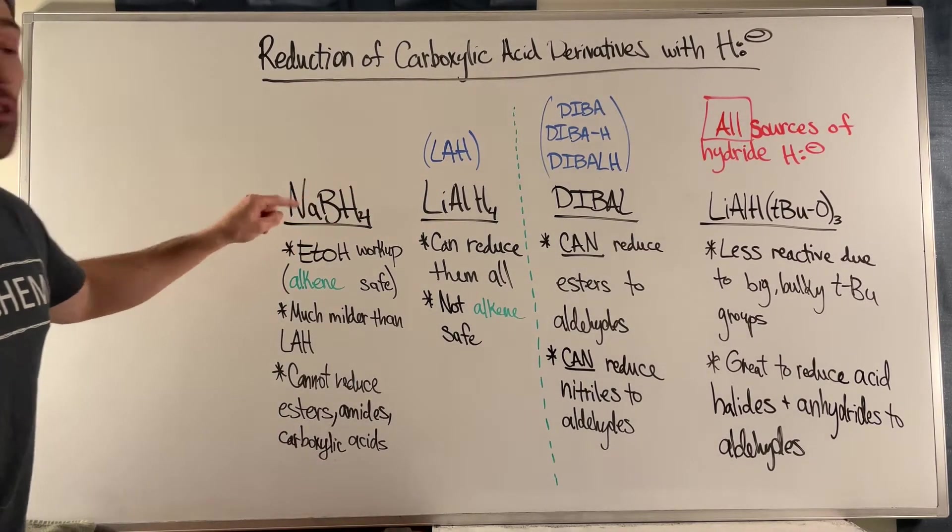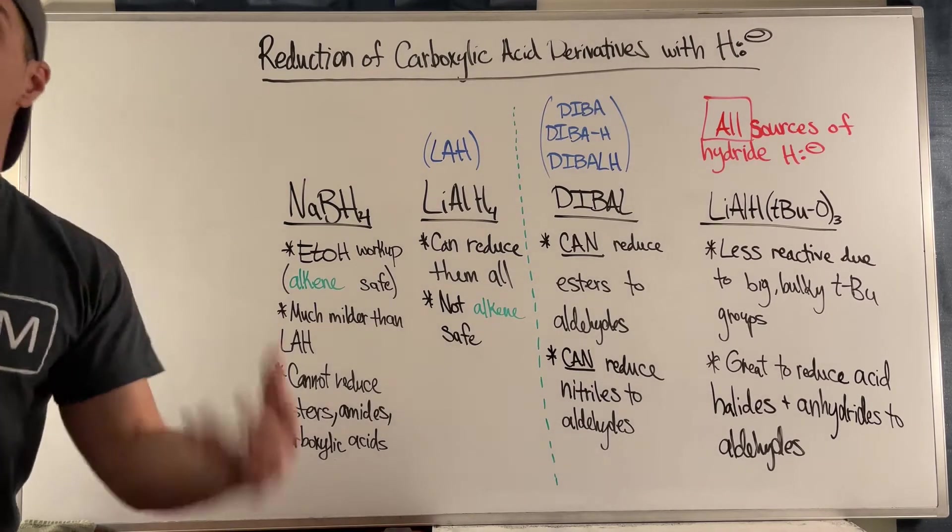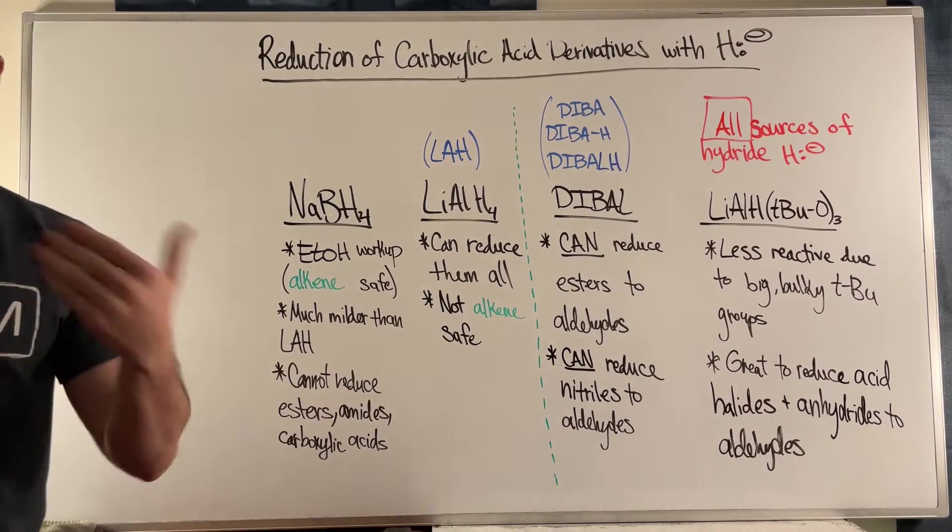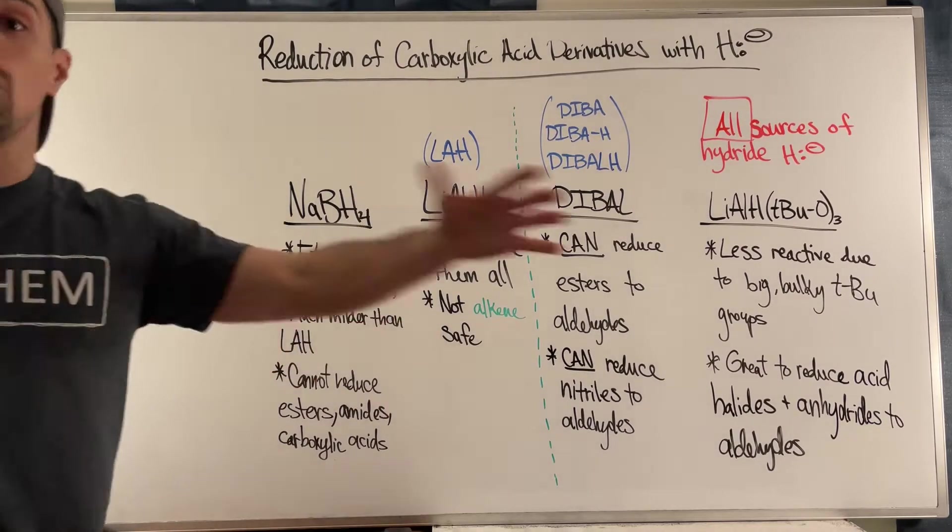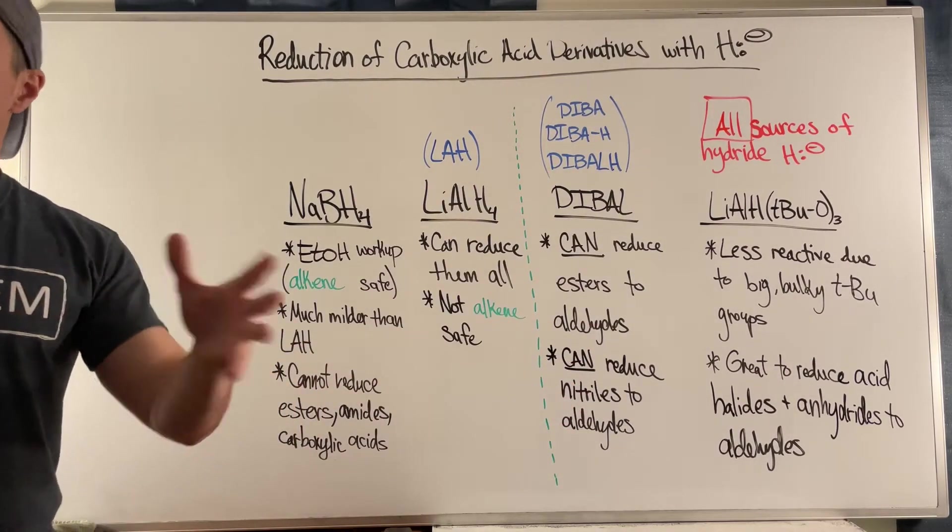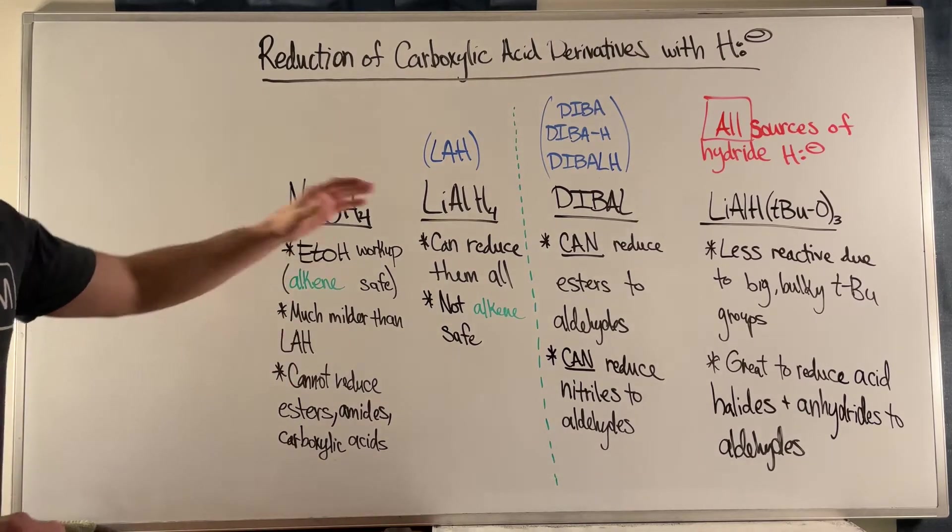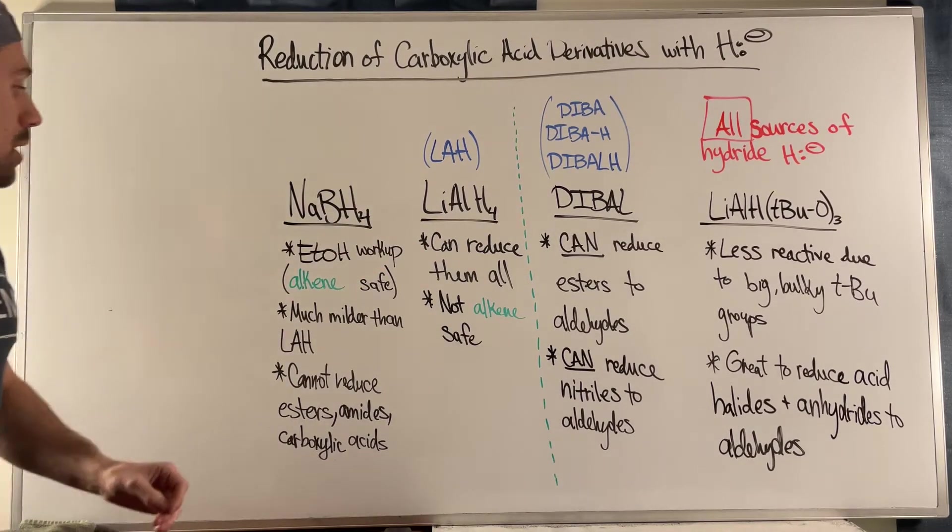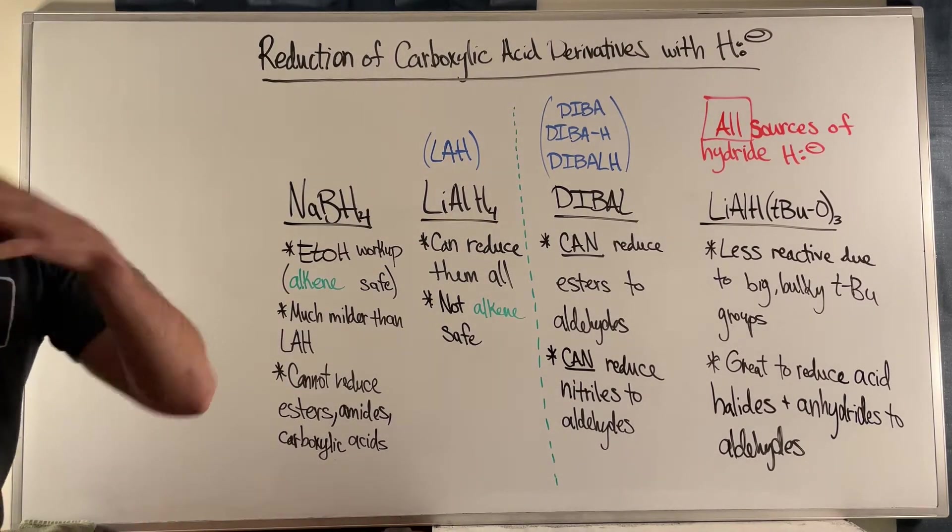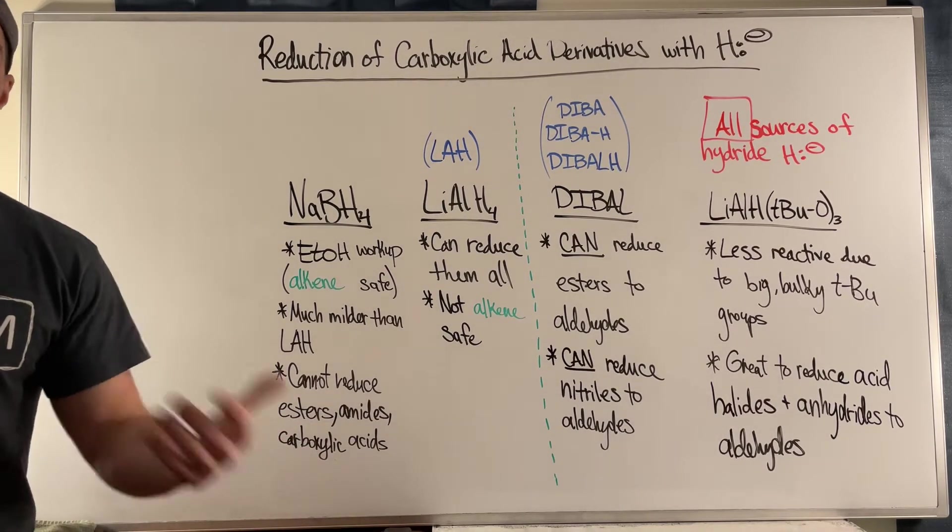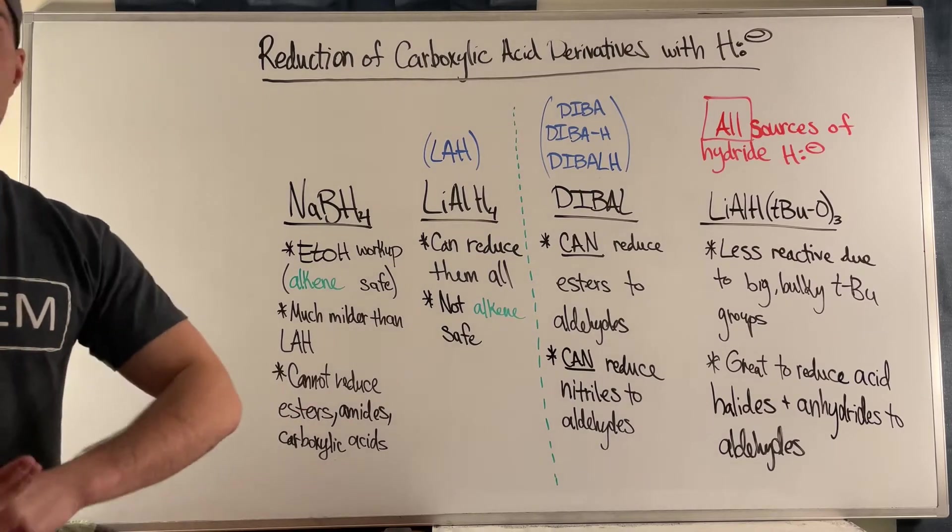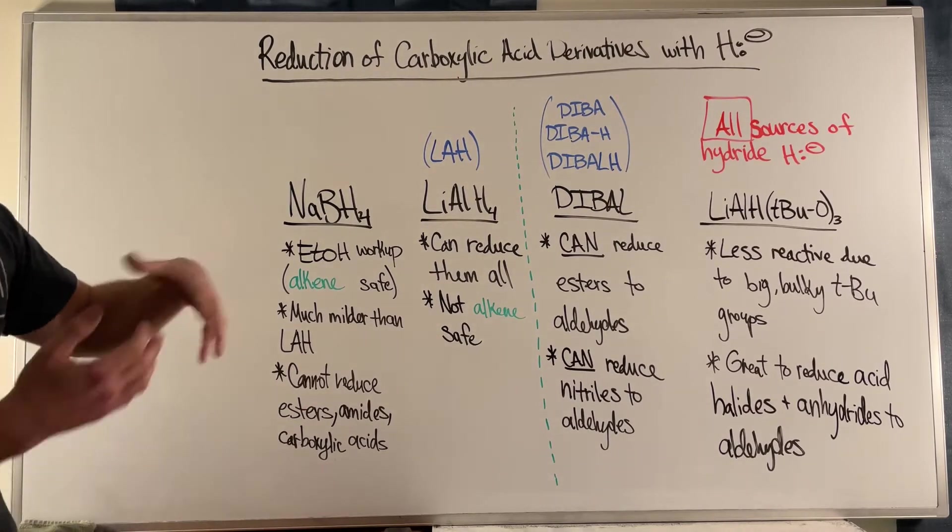NaBH4, between these two, this is your more mild option of H minus. When I say mild, I mean it's not going to go on a reduction war path if you use it. It's more conservative, it's not as crazy as lithium aluminum hydride. So it can't reduce esters, amides, and carboxylic acids, but it can do pretty much everything else.